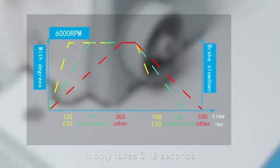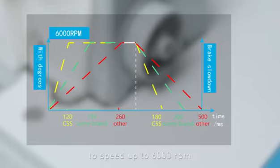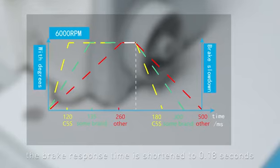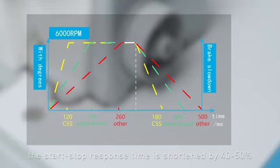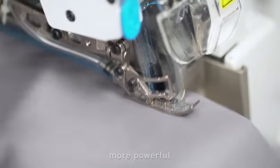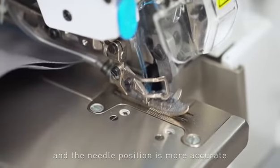It only takes 0.12 seconds to speed up to 6,000 RPM. The brake response time is shortened to 0.18 seconds. The start-stop response time is shortened by 40-50%. More powerful, and the needle position is more accurate.